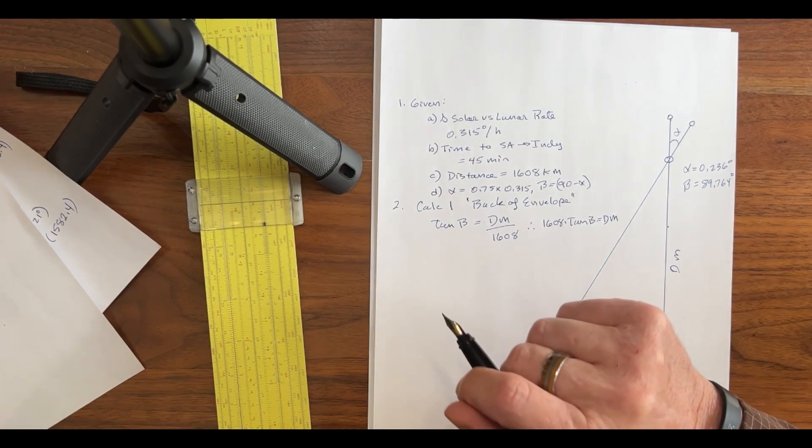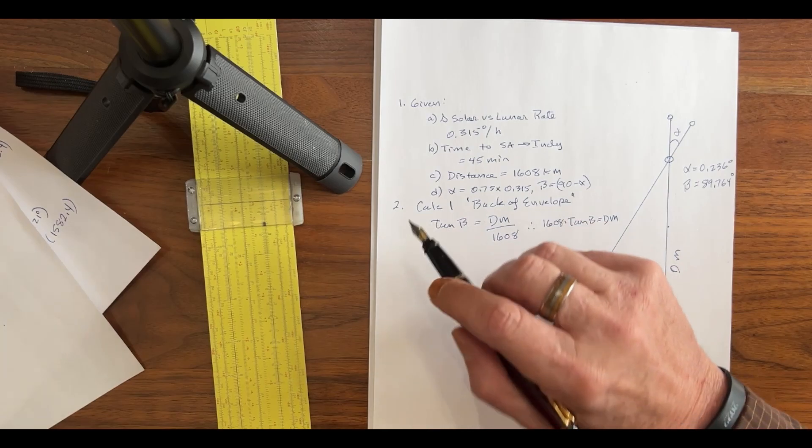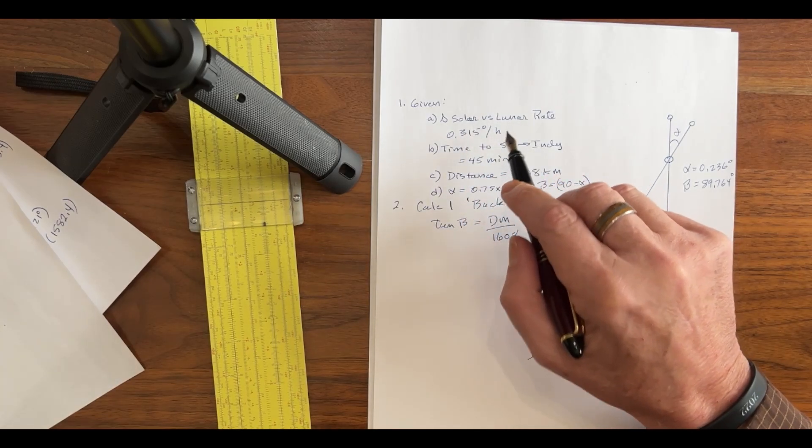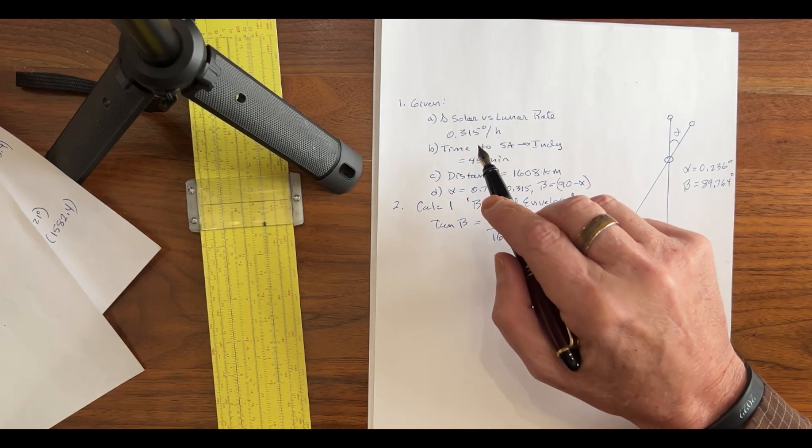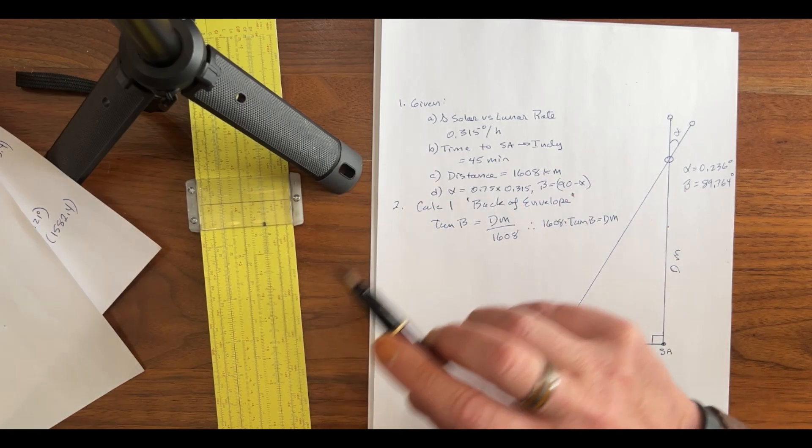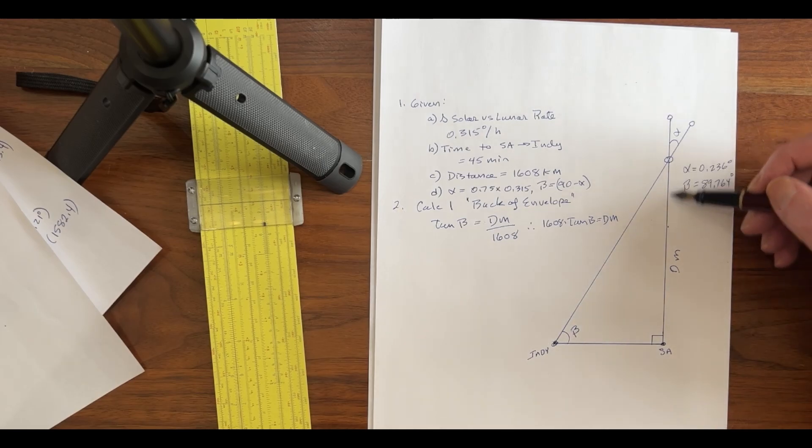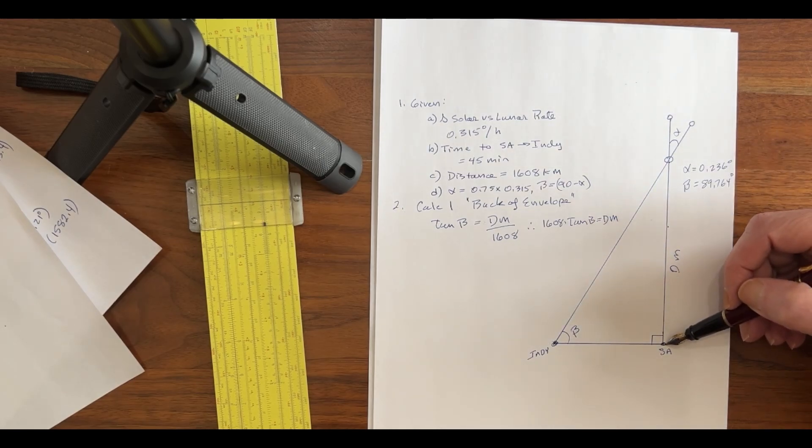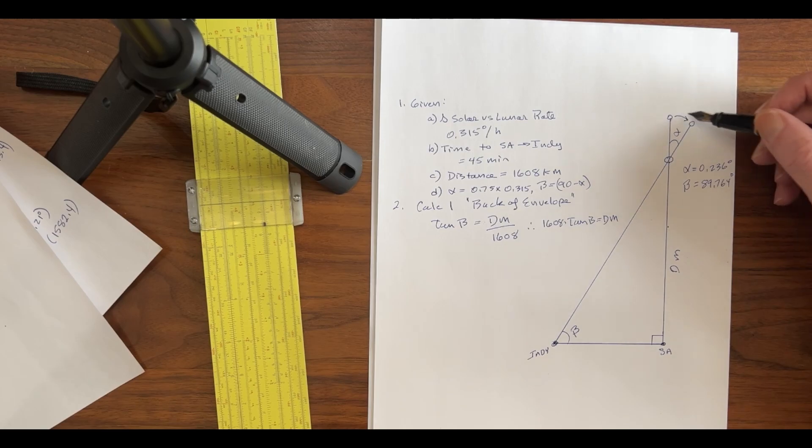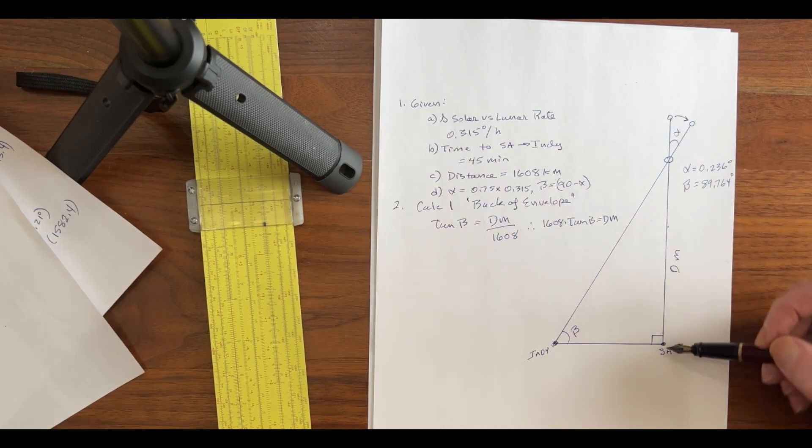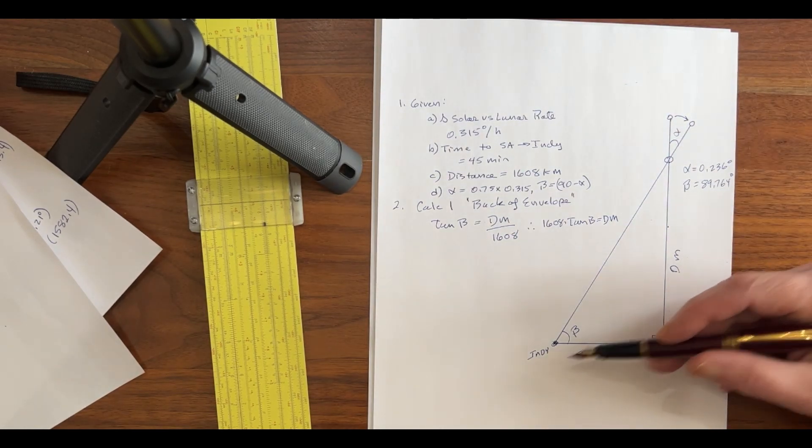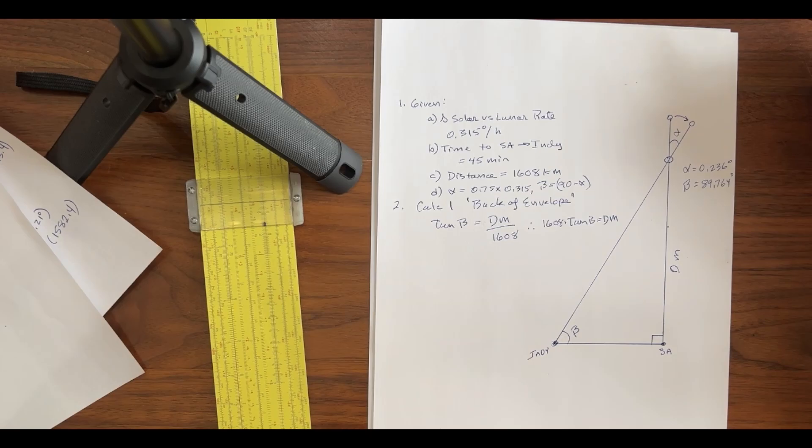Now, we have a couple of givens in this that we have already gone over, but I'm going to restate them now. The solar rate versus the lunar rate. There's a difference of 0.315 degrees per hour. The Moon transverses our sky slower than the Sun does. In other words, as the solar eclipse moves from San Antonio to Indianapolis, the Sun will move from here to here relative to the Moon. Now, the time that it's going to take is 45 minutes.